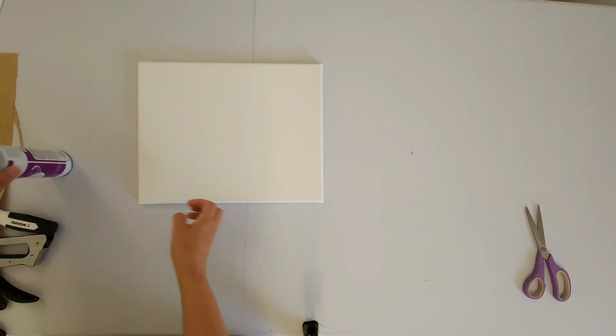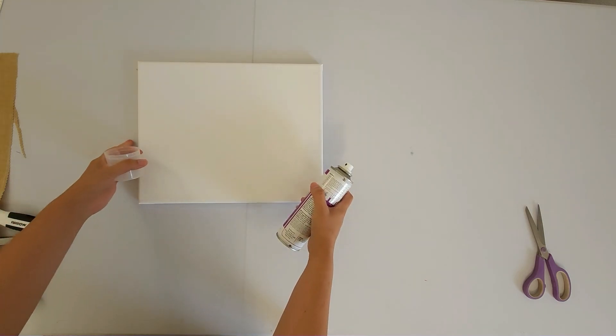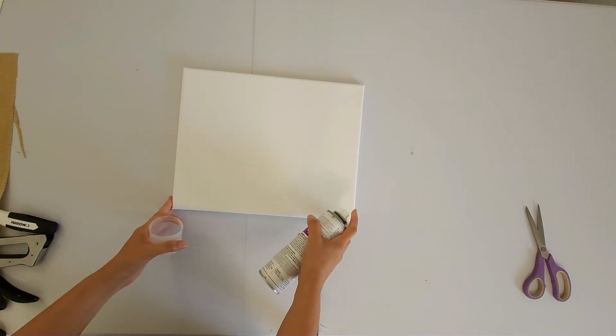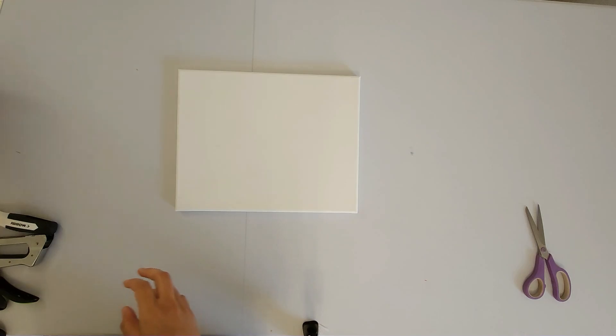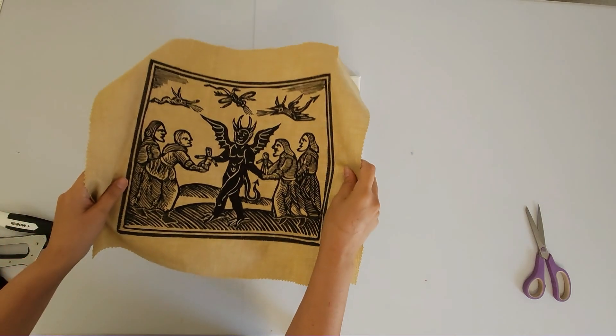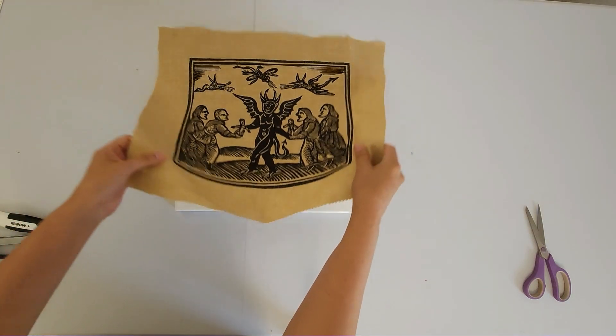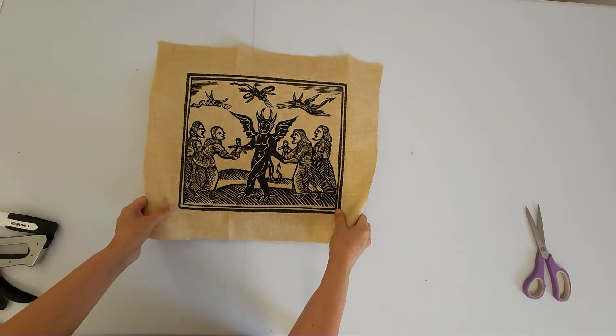So first I'm going to just spray a little bit onto the canvas. And basting spray is not permanent. That's why I like it. So you can easily pick up and move without it being too sticky.